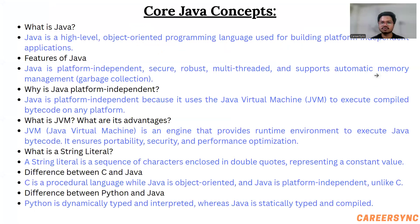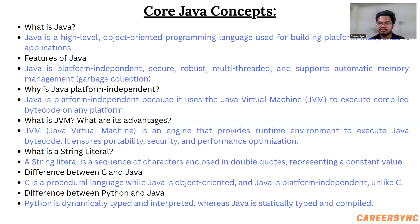Let's go to the core concepts, starting with: what is Java? Java is a high-level, object-oriented programming language used for building platform-independent applications. The next question — what are the features of Java? These questions are asked in interviews, so I've written all the answers very short; you should make them a bit more detailed when explaining to the interviewer. Java is platform independent, secure, robust, multi-threaded, and supports automatic memory management, which is garbage collection.